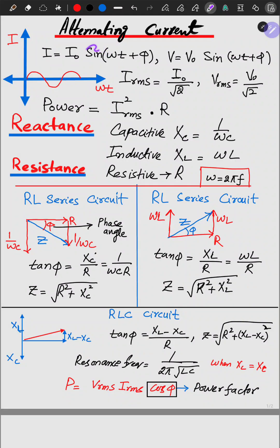Let us get a quick revision of alternating current. Current and voltages are given by these equations. The current is sinusoidal in nature.